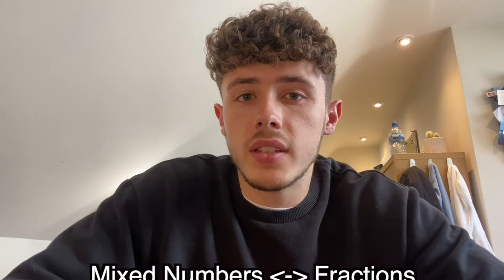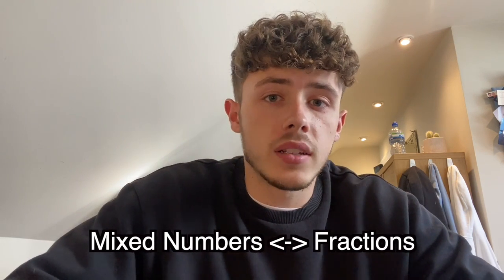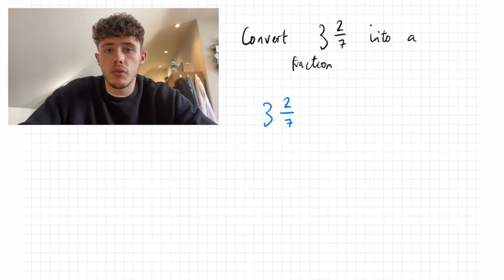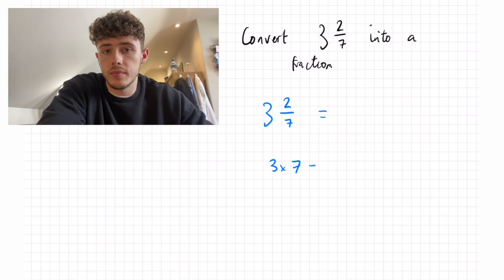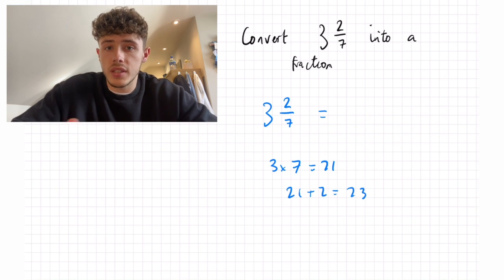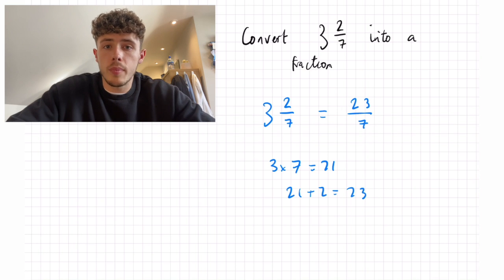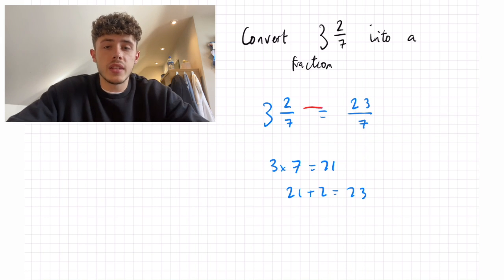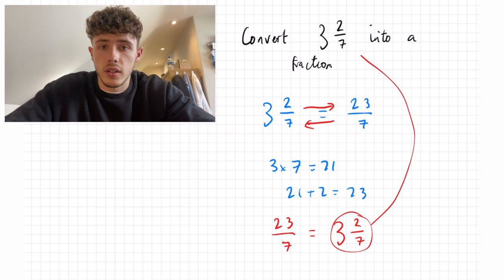We can also do this when converting an improper fraction into a mixed number. So let's say you have a question like this where we have to turn 3 and 2 7ths into an improper fraction. We would do our multiplying and our adding and we would get 23 over 7. Now as long as you know how to go back from an improper fraction into a mixed number, we would be able to get exactly back to the original question that they asked us.